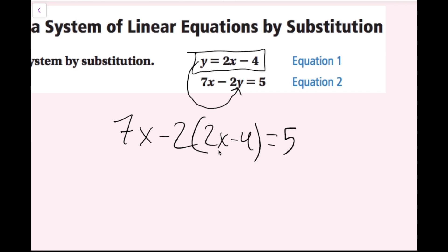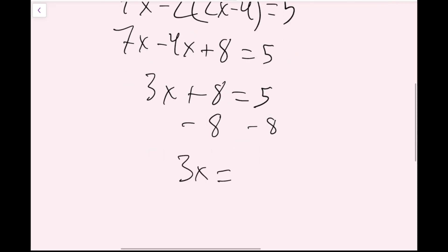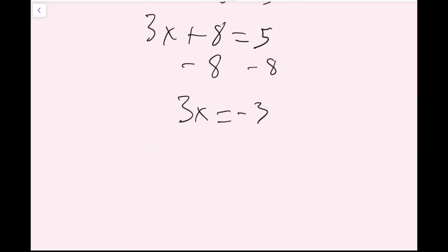Now I'm going to solve this equation to find my x value. The first thing I'm going to do is distribute, so I get 7x minus 4x plus 8 equals 5. Next, I'm going to combine my like terms: 7x minus 4x is 3x plus 8 equals 5. Now I'm going to subtract 8 on both sides, and I get 3x equals negative 3. The last step is to divide by 3 on both sides, so I get x equals negative 1.